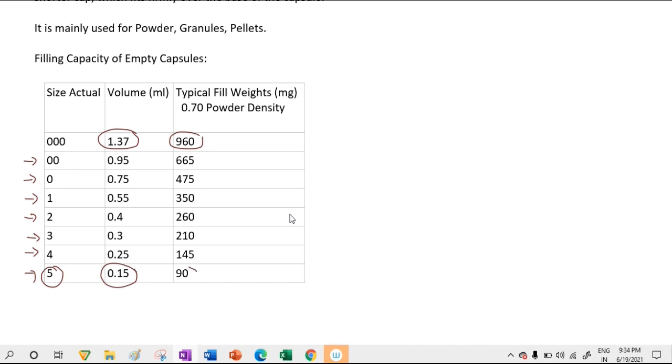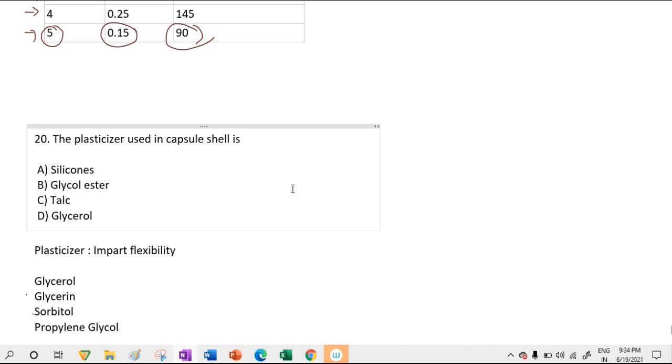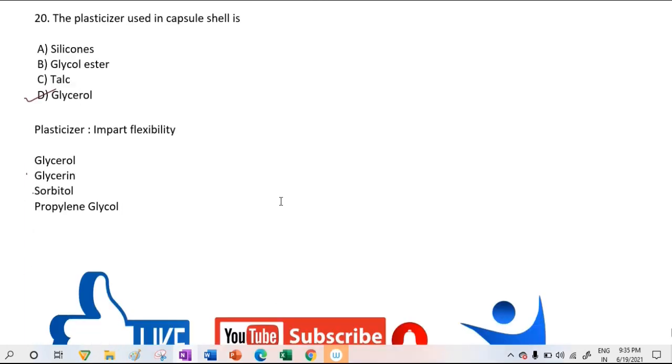The maximum capacity is for hard gelatin capsules. 000 capsule has 90 mg maximum capacity. Empty capsule shells use plasticizers to improve flexibility. Examples of plasticizers are glycerol, glycerin, and sorbitol.